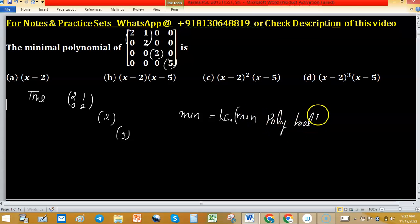The first block [2, 0, 1, 2] has minimal polynomial (x minus 2) whole square. The second block has minimal polynomial x minus 2, and the third block has minimal polynomial x minus 5.